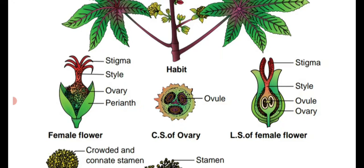This is the LS of a female flower. The outermost one is the perianth, enclosing the ovary. Inside the ovary they have the ovule. The stalk-like portion is called the style — at the tip they have the bifid stigma.